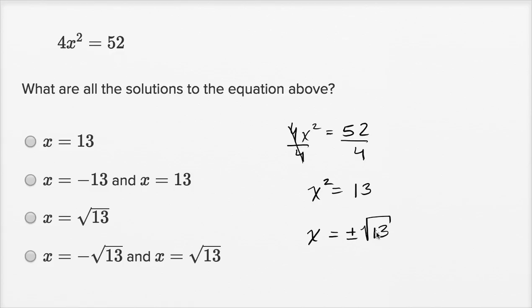And you could check your answer. Take the positive square root of 13 - if you square it, you're gonna get 13, and then multiply it times 4, you're gonna get 52.